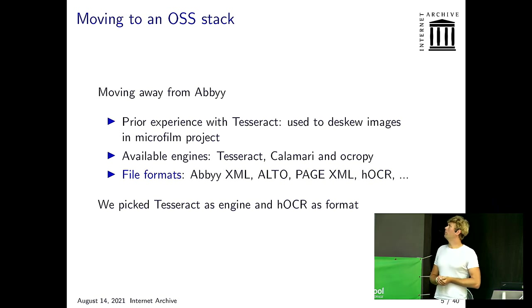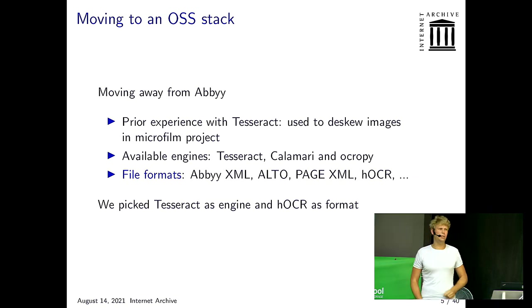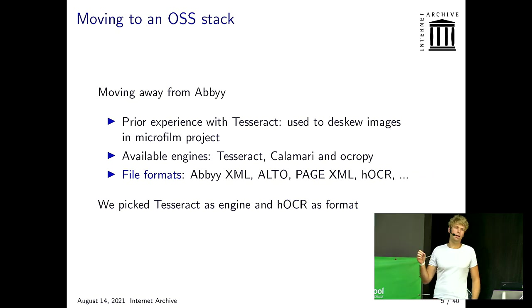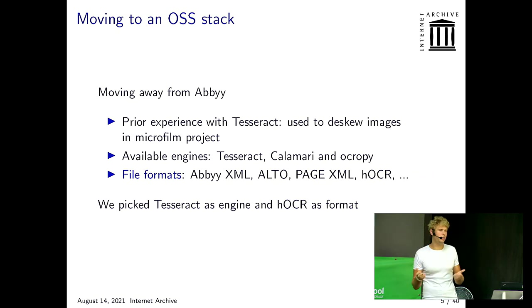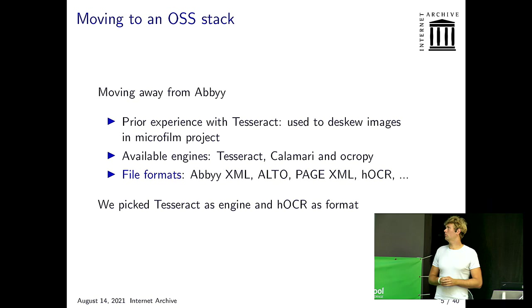I mentioned at the start that we were moving to an open source stack, which is one of the main interesting points here. That all started in August 2020 when we decided we wanted to move from our closed source software to open source — moving away from ABBYY FineReader. We were trying to evaluate what OCR software we could use instead that is close enough in quality but free software so we can improve it and make changes.